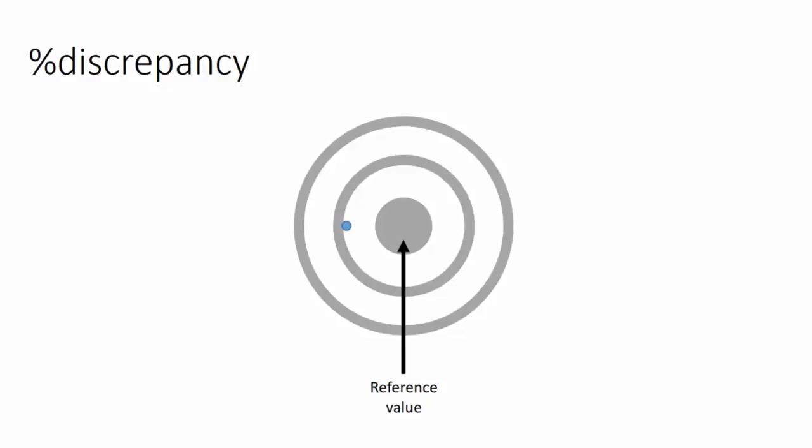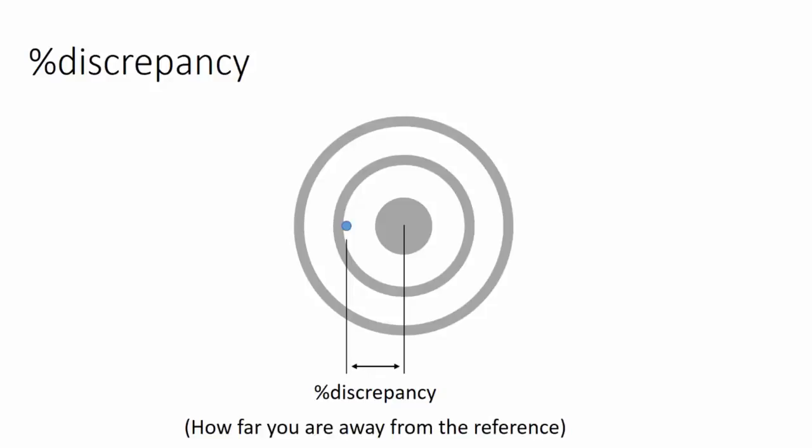This is however often not the case, so we hit somewhere off to the side, which is our experimental value. Then we ask ourselves, did we hit the target, did we miss the target? The distance from where we hit our experimental value and where we want to be the reference value, that's our percentage discrepancy. Which is a measurement of how far you are away from the reference value. Now is that big or is that small?